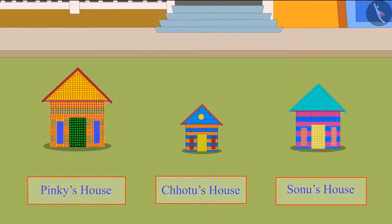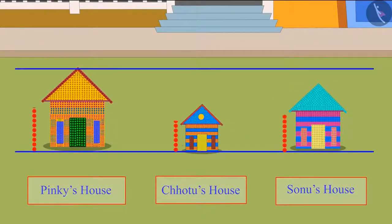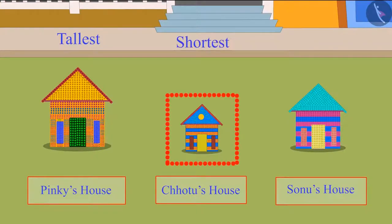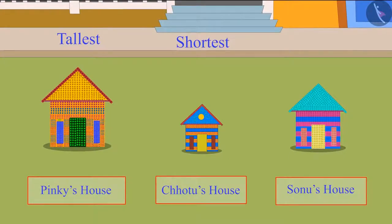So children, can you tell me who has made the tallest block house? You are right children — Pinky's block house is the tallest among these three. Can you tell me whose block house is the shortest of all? Yes, Chotu's block house is the shortest of these three. Could you guess the correct answer? Out of these three houses, Pinky's is the tallest and Chotu's is the shortest.